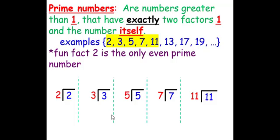Prime numbers are numbers greater than 1 that have exactly two factors, 1 and the number itself. Examples of prime numbers are 2, 3, 5, 7, 11, and so on. A fun fact: 2 is the only even prime number.